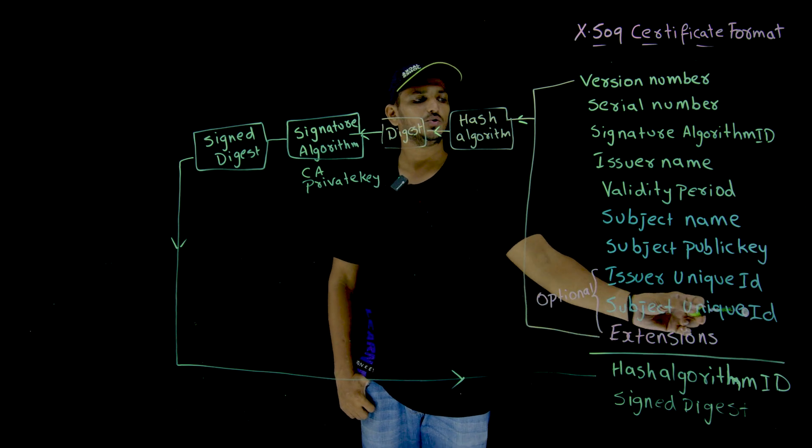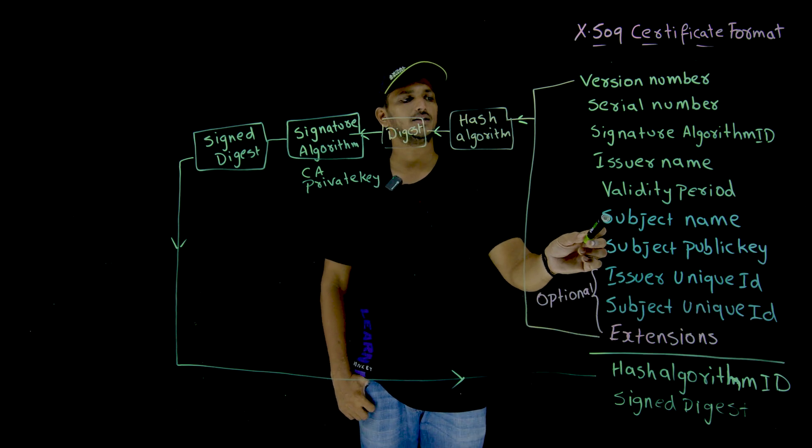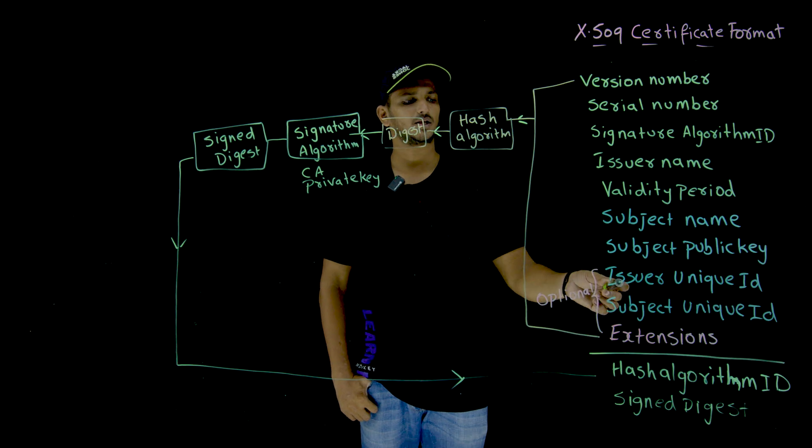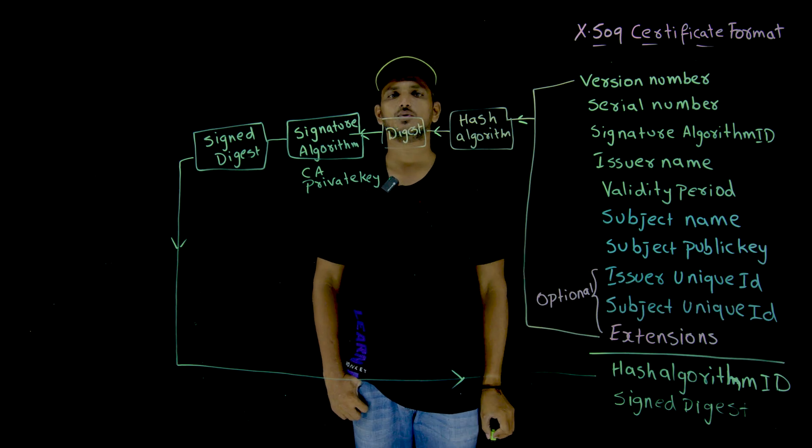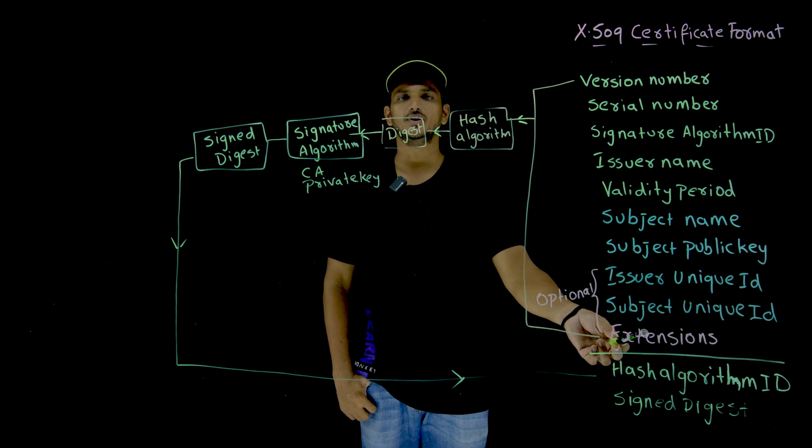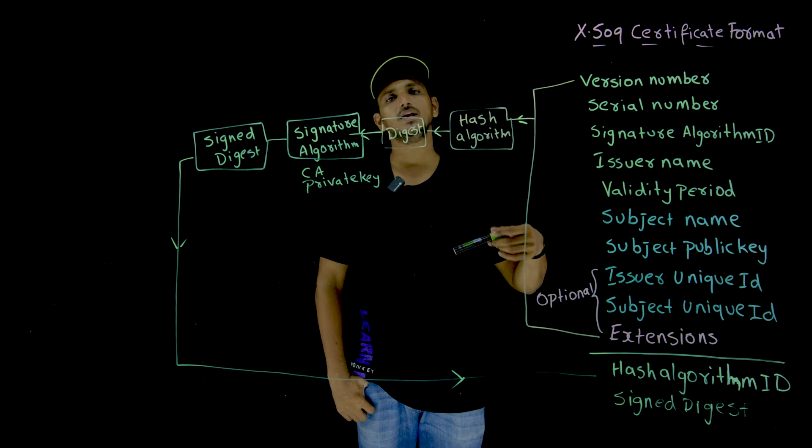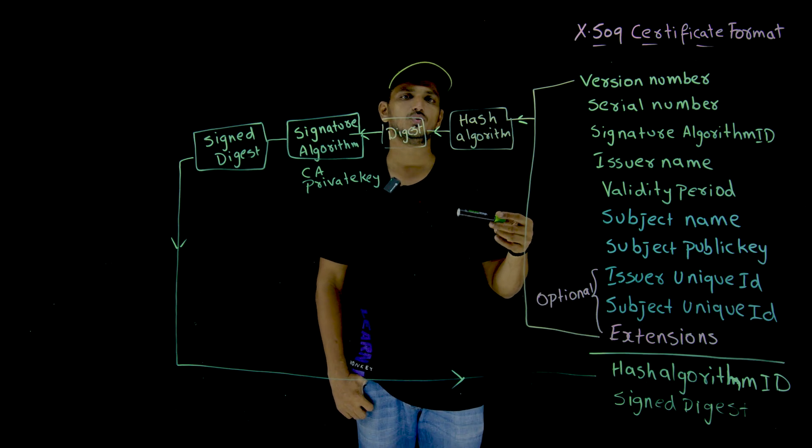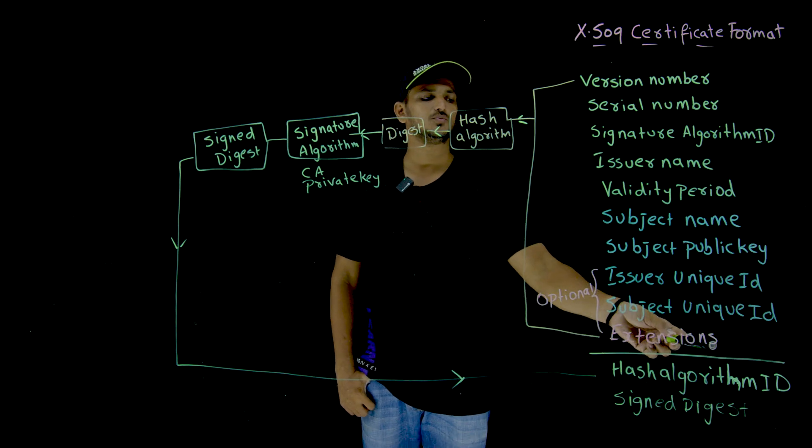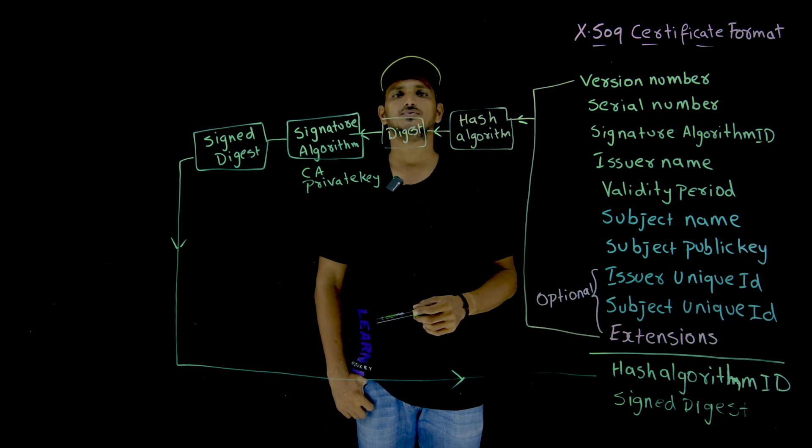And subject unique ID, learningmonkey.in, that is enough. But sometimes we need unique ID as also provided. Similarly, Extension field. Extension means any information, other information which we want to share, that information should be provided in the Extension field.